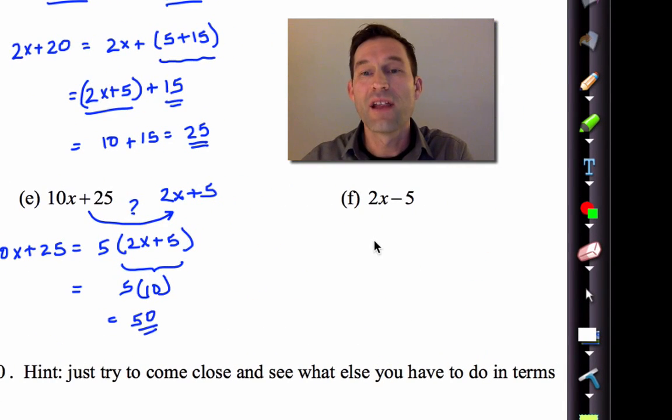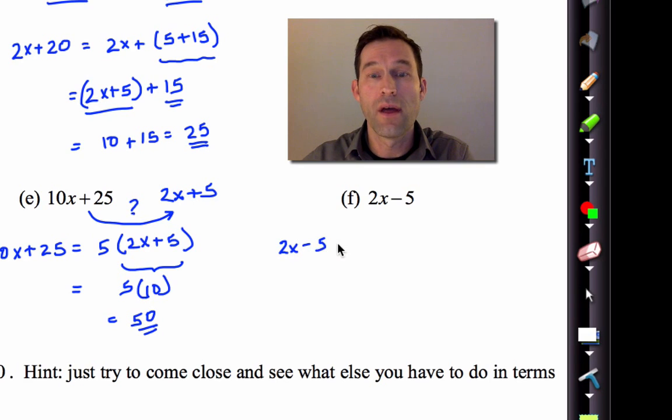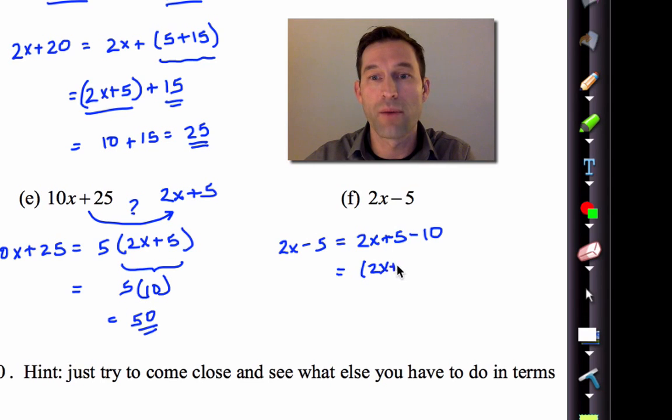Well, hopefully you'd see, again using the distributive property. See how often we use the distributive property? Probably formally more often than the other two, right? I know that 10x+25 can be thought of as 5 times 2x+5. And again, because 2x+5 can be treated as a single quantity, i.e. 10, I can say that's 5 times 10, and that expression must be 50.